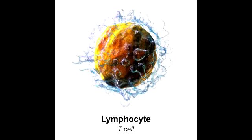B-lymphocytes mature in the bone marrow, which is why they are named B-lymphocytes. T-lymphocytes mature in the thymus, hence the name T-lymphocytes.